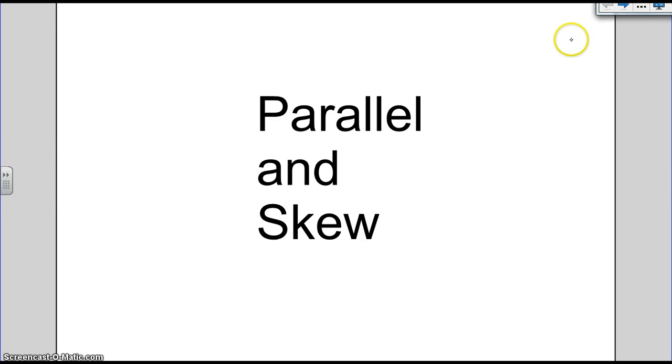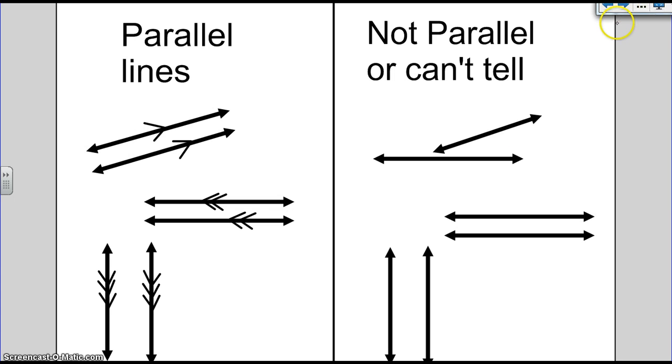Okay, so today we talk about parallel and skew lines. Parallel lines, these are examples of parallel lines. Now if you'll notice, the notation that they use are these arrows. So whenever you see one arrow, that means these two lines are parallel.